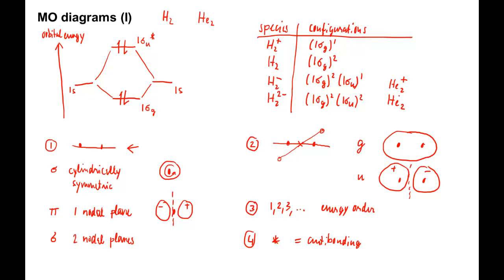Taking one electron out gives helium-2+, which is isoelectronic to H2-. According to the MO occupations, 1 sigma G squared, 1 sigma U, 1, this should form a bond. And indeed, it is a species that can be observed in the gas phase.